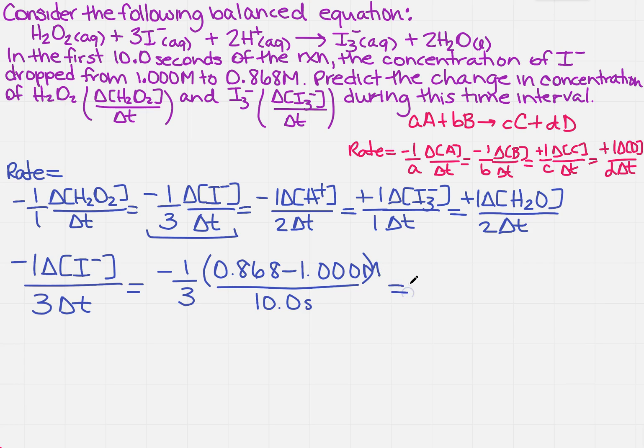So I'm going to do this calculation on my calculator. When I did this on the calculator, I got 4.40 times 10 to the minus 3. Remember, we said we had molarity on top and seconds on the bottom. That's great, but that's not what it wanted me to predict, right? I've got to do H2O2 and I3 minus.